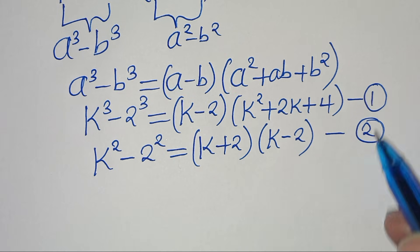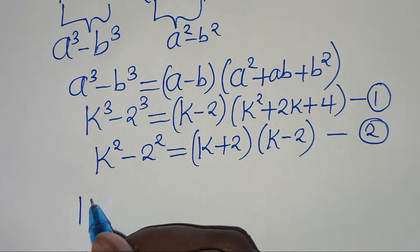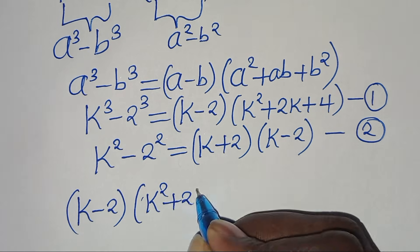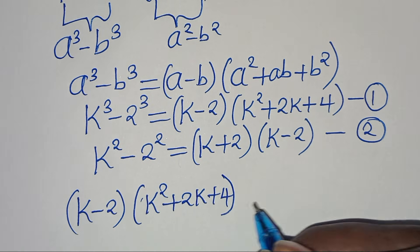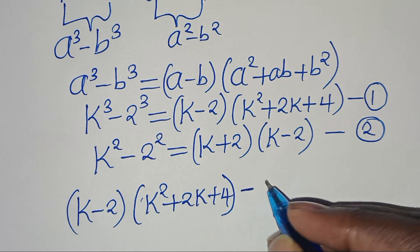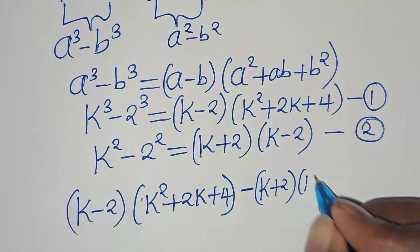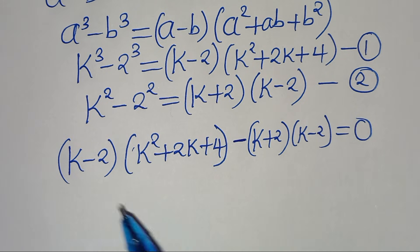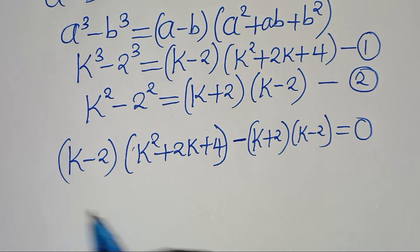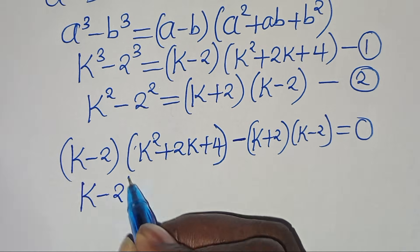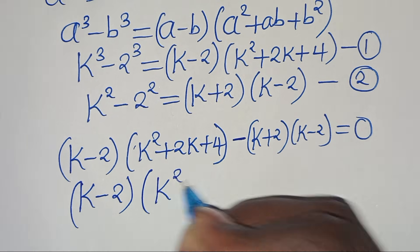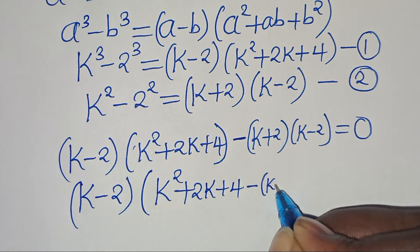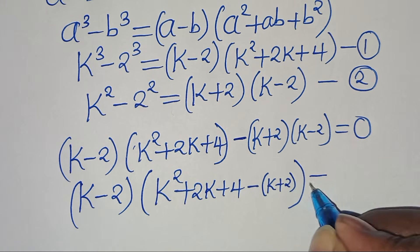Now let's combine equation 1 and 2, so that we have (k minus 2)(k squared plus 2k plus 4), subtract (k plus 2)(k minus 2), and this is equal to 0. Now, if we check here, we see that (k minus 2) is common, so we can factor out (k minus 2), giving (k minus 2) times the quantity (k squared plus 2k plus 4) minus (k plus 2), equal to 0.